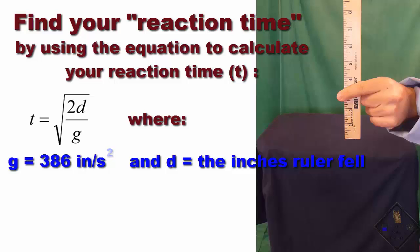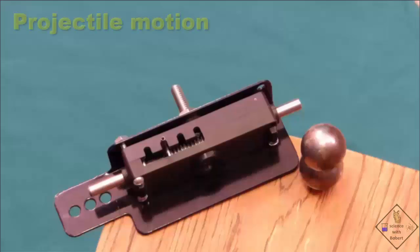Did you know that a horizontally moving object falls at the same rate as a dropped object, as long as air resistance is the same for both objects?